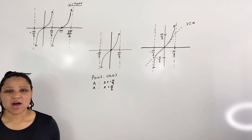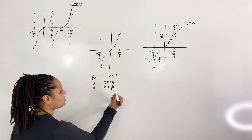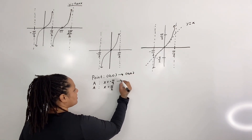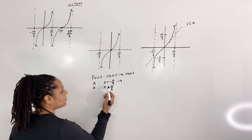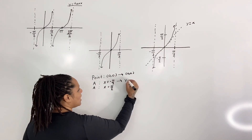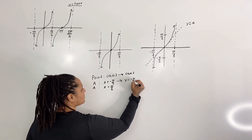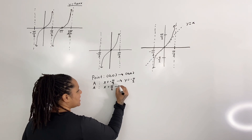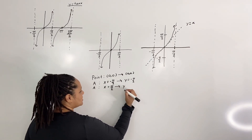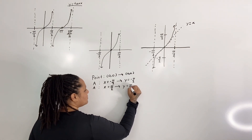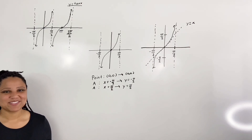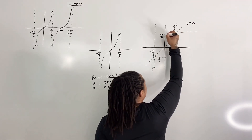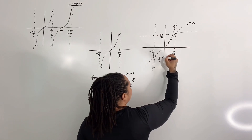Step four: swap the x and y values. The point at zero zero will stay the same. We have a vertical asymptote at x equal negative pi over two — swapping the x and y values, it becomes y equal negative pi over two. We have another asymptote at x equal pi over two, which becomes a horizontal asymptote at y equal pi over two. I'll put the point and asymptotes on our graph.